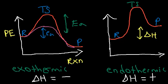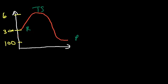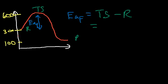It turns out that the enthalpy is really the difference between the activation energy of the forward reaction and the reverse reaction. Let's put some numbers to this: say the products are at 100, the reactants at 300, and the transition state at 600. The forward activation energy is the difference between the energy of the transition state and the energy of the reactants — that's 600 minus 300, so the forward activation energy is positive 300.